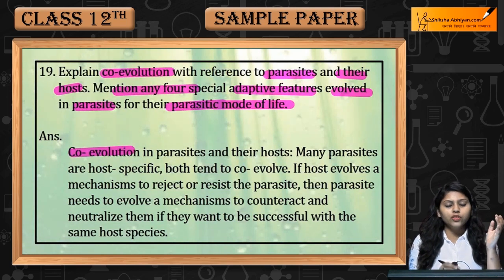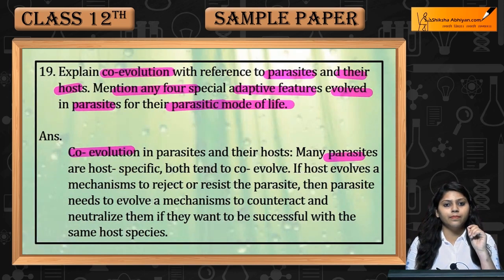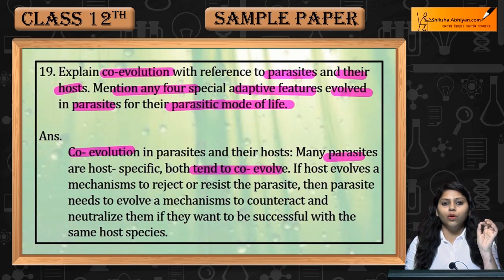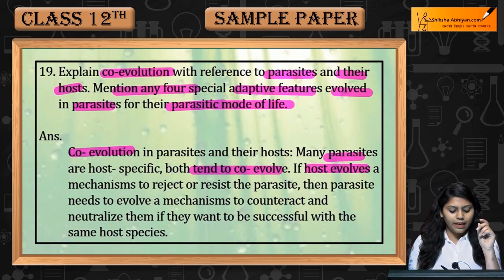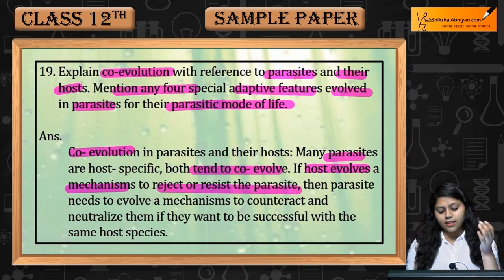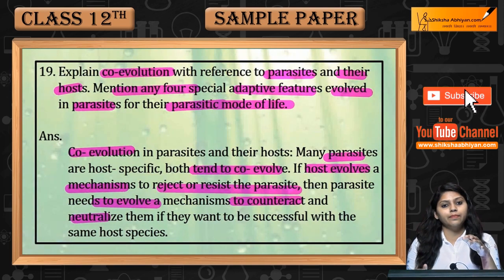Co-evolution: if one can evolve, then the other can evolve. Many parasites are host-specific, and both tend to co-evolve. The host evolves mechanisms to reject or resist the parasite, and then the parasite evolves mechanisms to counteract and neutralize them.